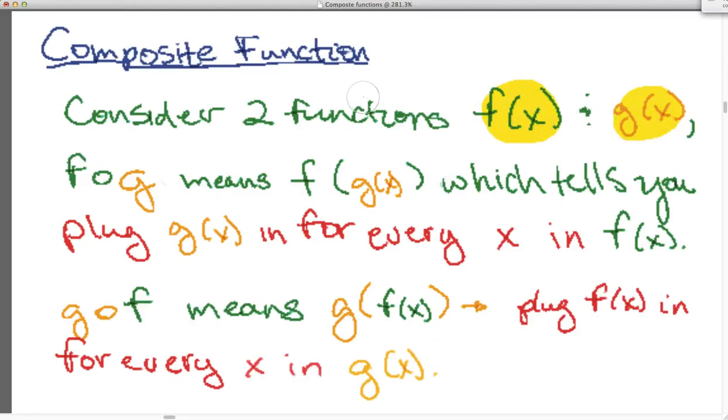And if you have this here, fog, that means this. It's another way of writing f of g of x which says plug in g of x for every x you see in the parent function f of x.